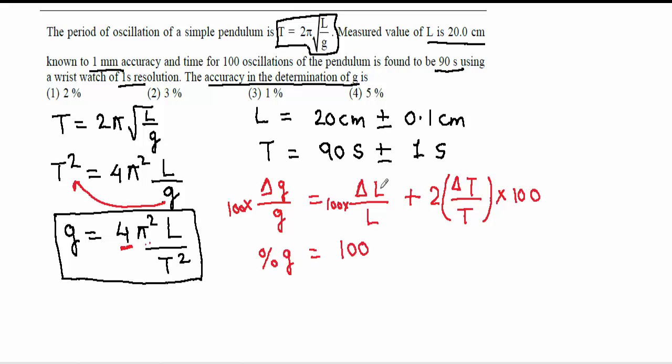So it will be, this is error in length or accuracy in length, that is 0.1 centimeter divided by 20 centimeter value of length, plus 2 times ΔT. Here is accuracy in time, 1 second, divided by value of time, that is 90, times 100. So percentage of g will give us 0.5 plus 2.2.